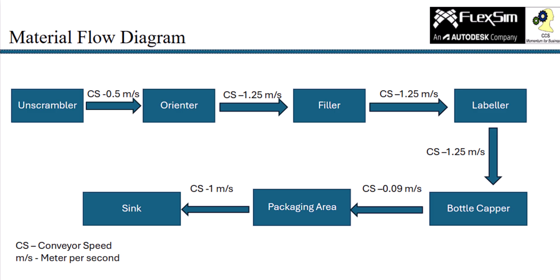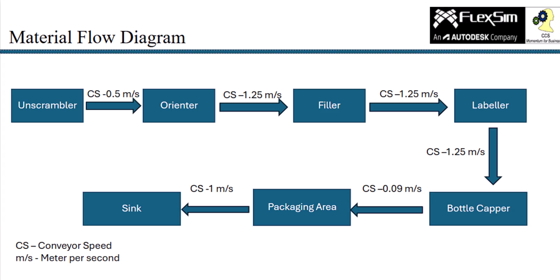Next, the bottles follow a single lane and travel to the filler, moving at a speed of 1.25 meters per second, where they are filled. After filling, they continue to the labeler, also at 1.25 meters per second, where labels are applied. From the labeler, the bottles proceed to the capper machine at the same speed of 1.25 meters per second, where caps are placed.